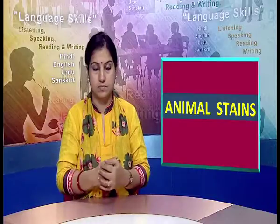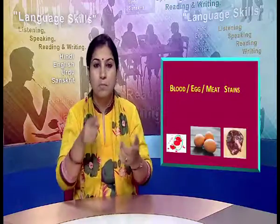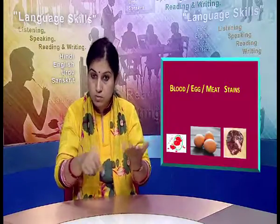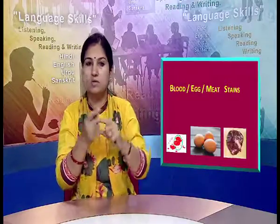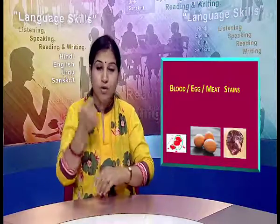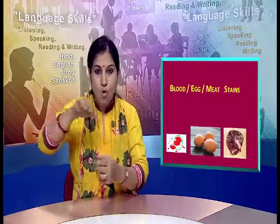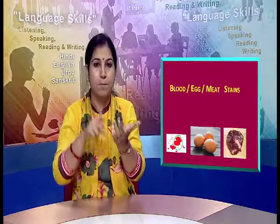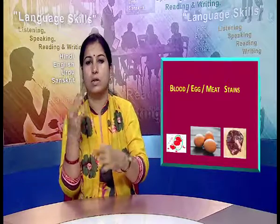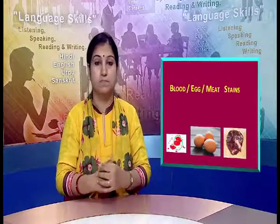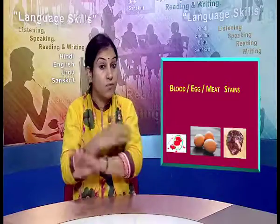Second category: animal stain. For stains like blood, egg, and meat on fresh cotton cloths, wash with cold water and soap. For white cotton cloths, soak in salt water or diluted ammonia for 5-10 minutes. For coloured cotton cloths, follow the same procedure as for white cotton cloths.